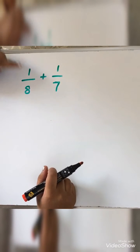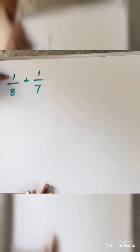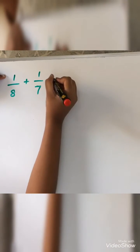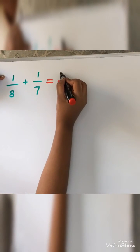This is the numerator and this is the denominator. For finding the numerator, we should add both these numbers. So 8 plus 7 equals 15.